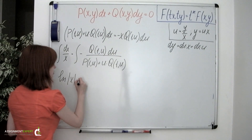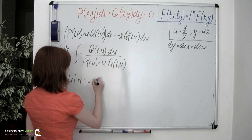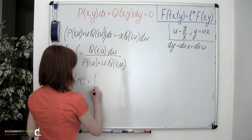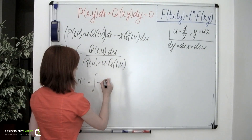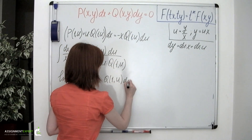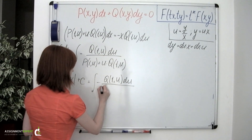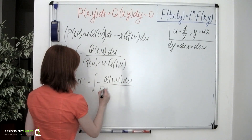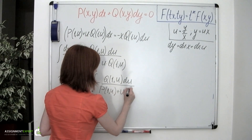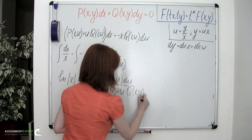Integrating, we obtain the natural logarithm of the absolute value of x plus a constant, equal to the integral of negative Q(1, u) du over P(1, u) plus u times Q(1, u).